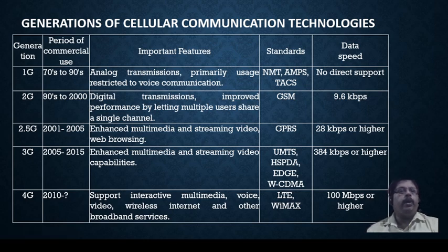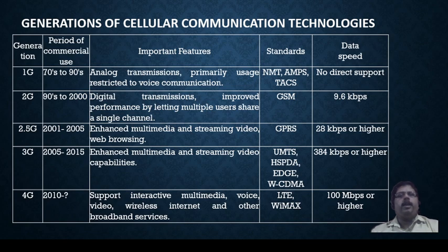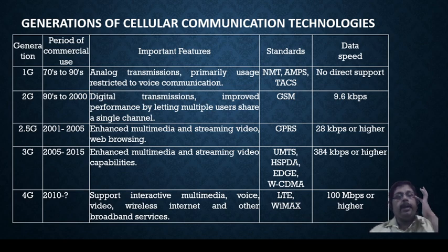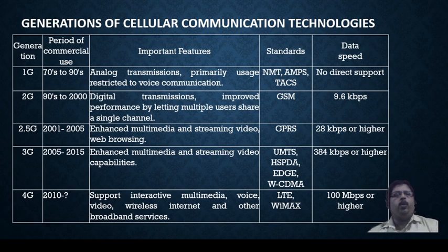In this video we will discuss the generations of cellular communication. Just like computer technology, mobile technology is also divided into generations — 1G, 2G, 2.5G, 3G, and 4G — where G stands for generation. The divisions are based on the technology used, improvements in speed, changes in processors, devices, and standards. Looking at the table, we have four main generations.